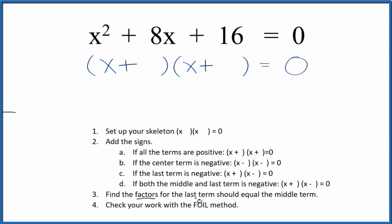Next, we want to find the factors for that last term — the 16 — that equal the middle term, meaning they add up to 8. So we could have 1 times 16, that equals 16, but 1 and 16 don't add up to 8.